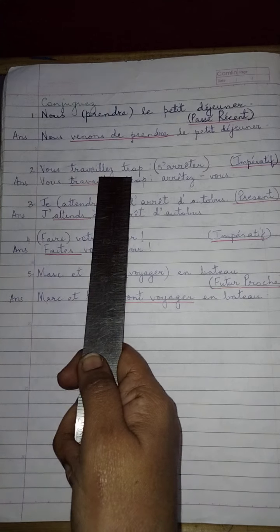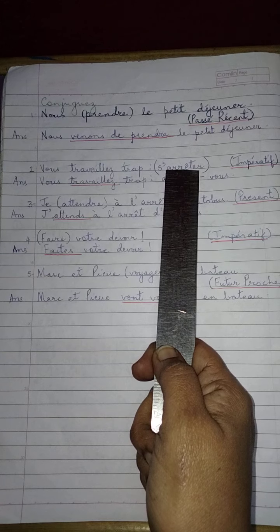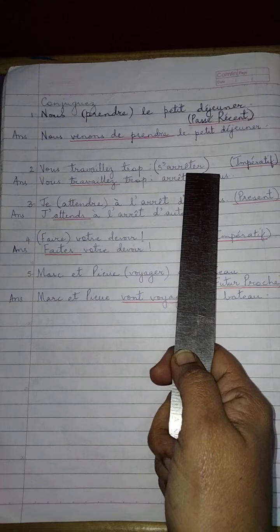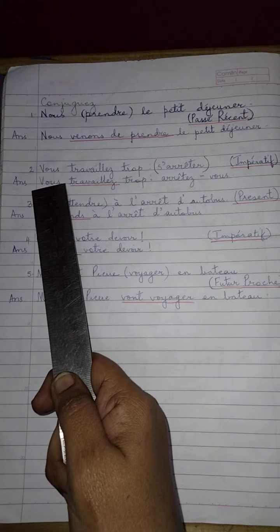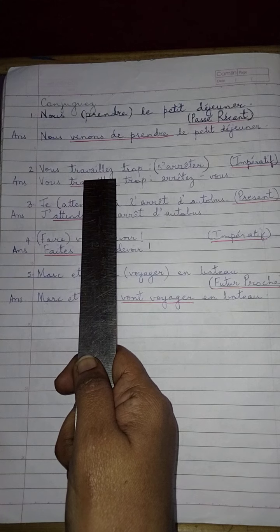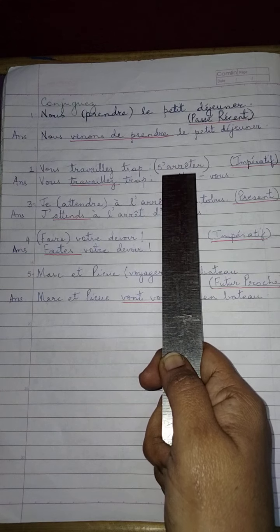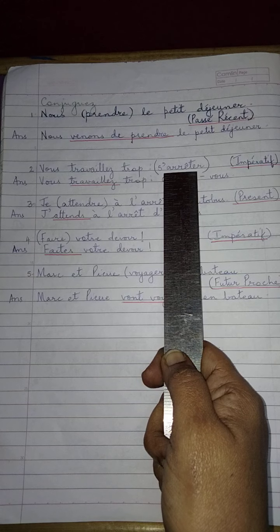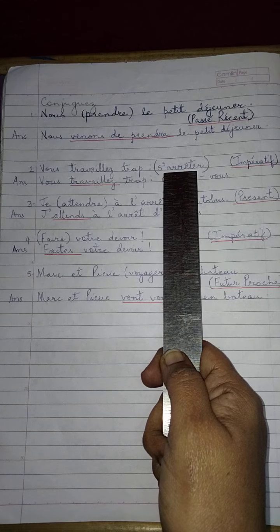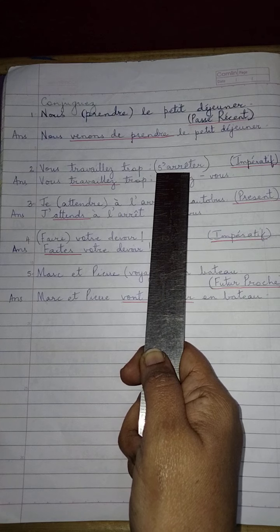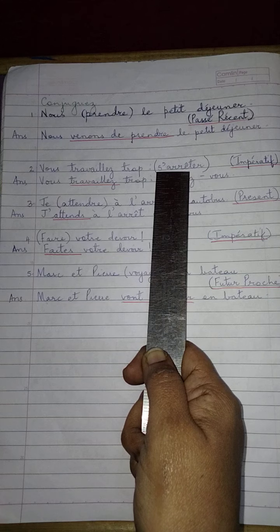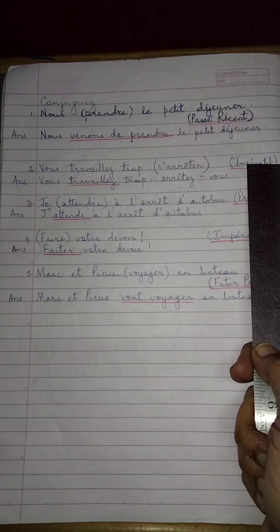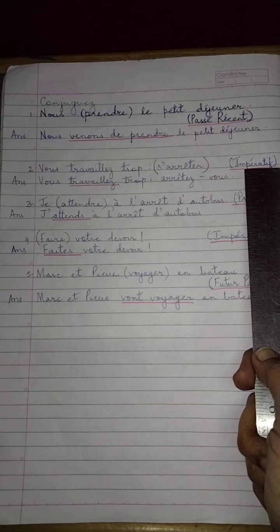All right, the next one. Vous avez trop [s'arrêter]. Okay? You worked a lot — stop. Now, how will you conjugate this? First of all, you know 's'arrêter' is a reflexive verb, because it has a reflexive pronoun before it. They expect you to conjugate it in the imperative form. You have learned the imperative of reflexive verbs.